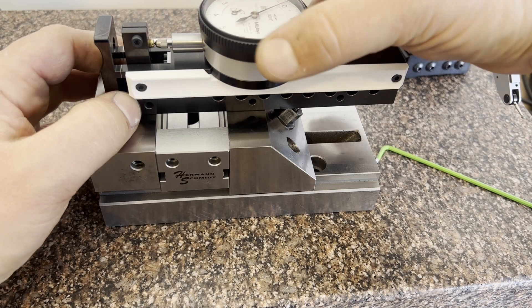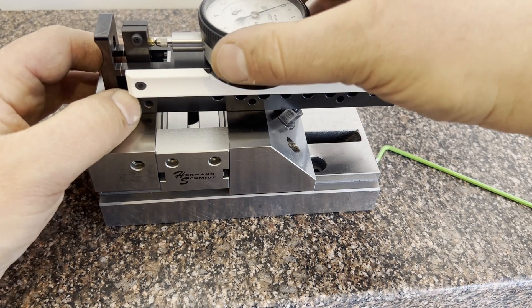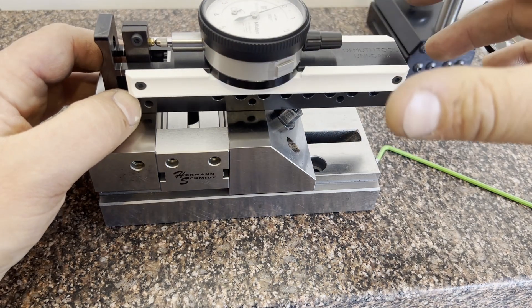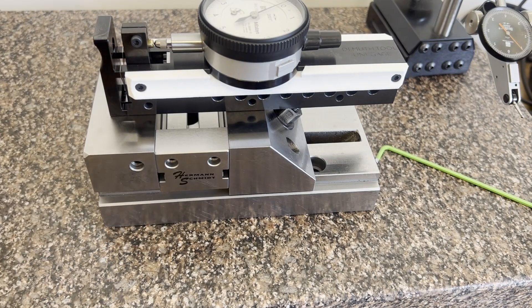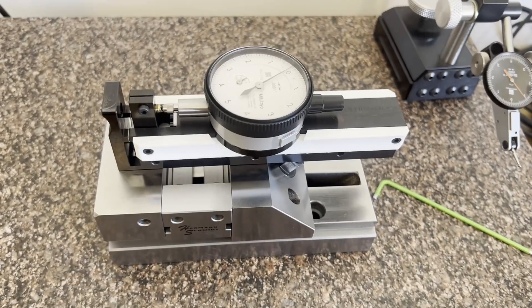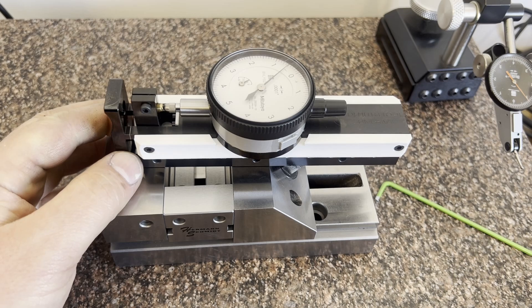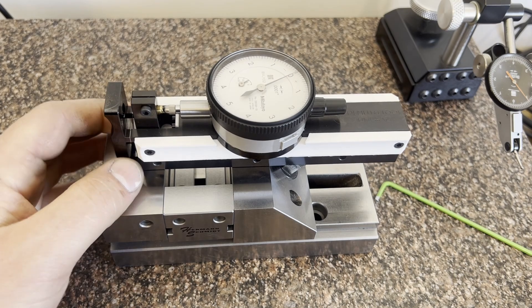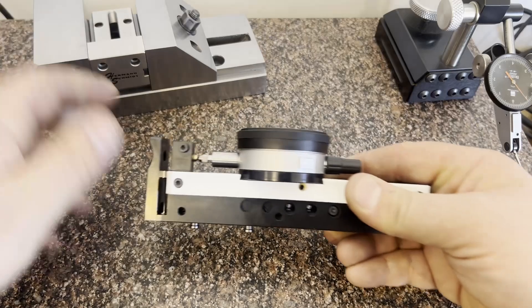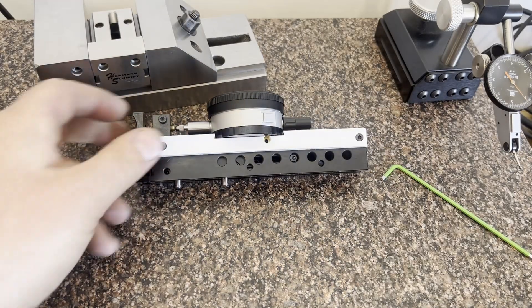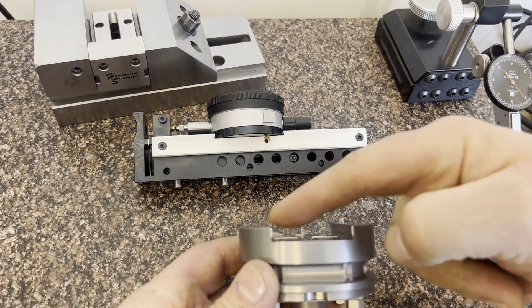We're going to zero it to the Hermann Schmidt small vise, and we're going to do that by using the big vise as a setting standard so to speak, by just clamping the small vise in the big vise. Now we can zero the gauge out, and the gauge is now set to whatever the width of the Hermann Schmidt tiny vise is, and that's what we'll be measuring.